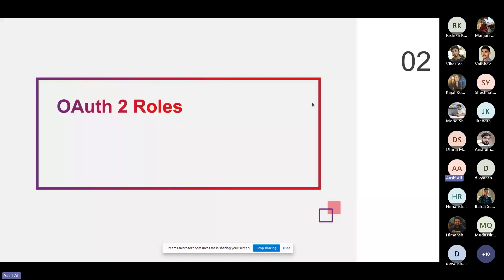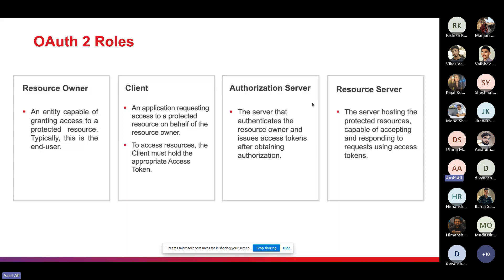OAuth2 defines four roles. The resource owner is the entity capable of granting access to a protected resource — typically the end user who grants permission. The client is the application requesting access to a protected resource on behalf of the resource owner; to access resources, the client must hold an appropriate access token from the authorization server. The authorization server authenticates the resource owner and issues access tokens after obtaining authorization. The resource server hosts the protected resources and is capable of accepting and responding to requests using access tokens.